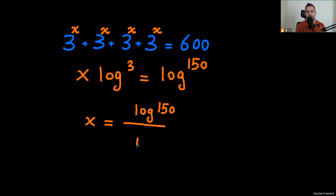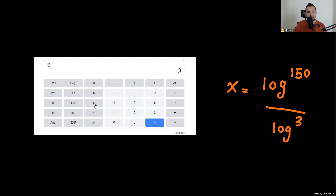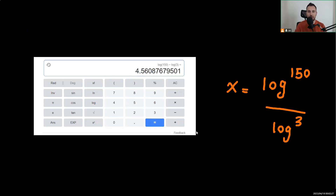If you're looking for a decimal value, we can use a calculator, or we can apply the change of base rule and rewrite this as log base 3 of 150. Using a calculator — log(150) divided by log(3) — the answer comes out to approximately 4.56.